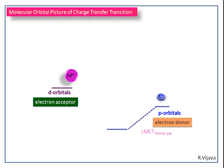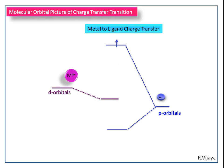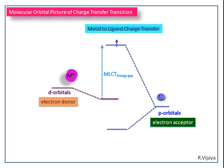Next we see another transition. Here the electron in the d orbital of the central metal ion can be excited to the anti-bonding orbital of the ligand. This type of transition is known as metal to ligand charge transfer transition. This is a d to p type transition, which is Laporte-allowed. This is also a spin-allowed transition because the spin direction is not changed. The energy gap between these two molecular orbitals is known as the MLCT energy gap.